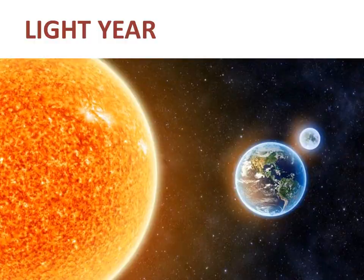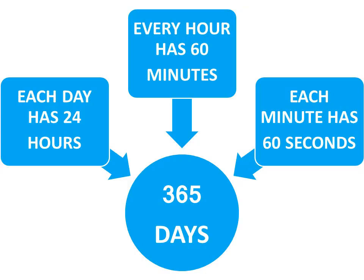We know light travels at a speed of 3 × 10^8 meters per second. Therefore, in a year, we have 365 days. Each day has 24 hours, every hour has 60 minutes, and each minute has 60 seconds.